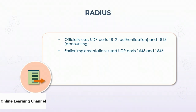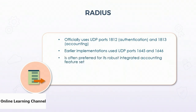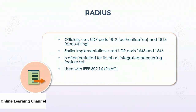It's important when you deploy RADIUS to make sure that the network authenticating device and the RADIUS services are using the same ports. RADIUS is often preferred over other authentication and authorization protocols for its robust integrated accounting feature set. RADIUS is the protocol used with IEEE 802.1x port-based network access control. The next generation of RADIUS is called Diameter.